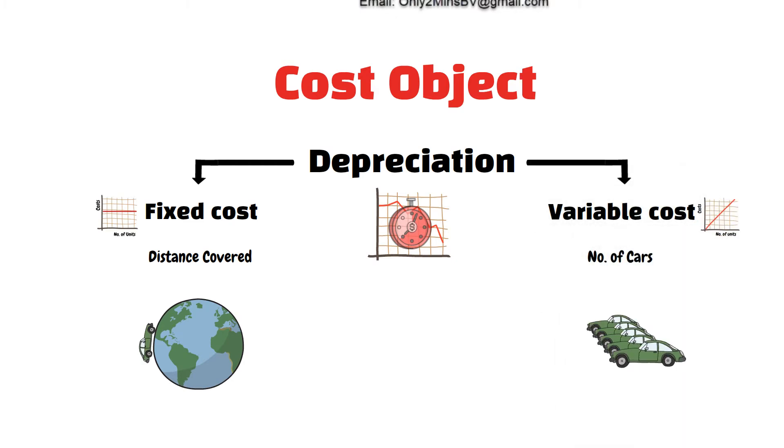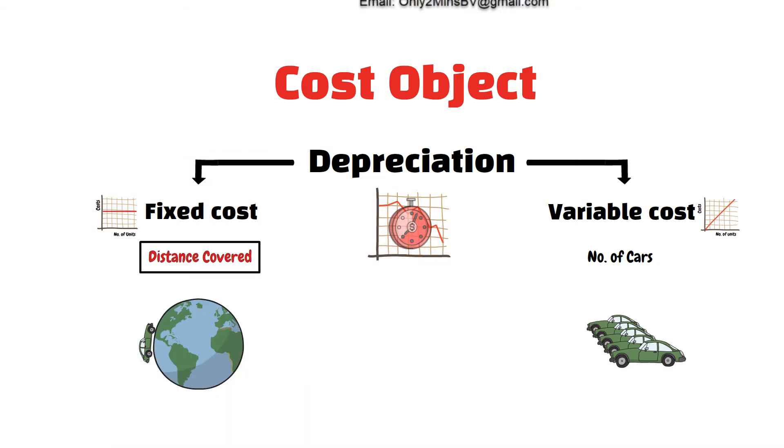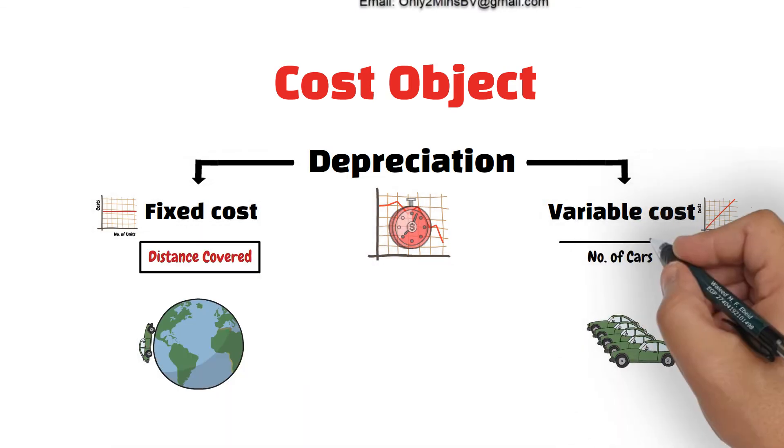So it is a fixed cost if the cost object is the distance covered by the car and is a variable cost if the cost object is the number of cars.